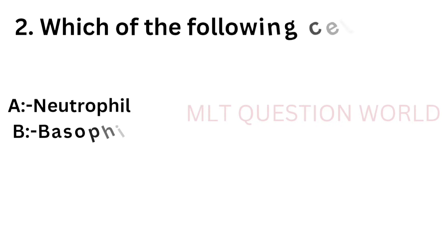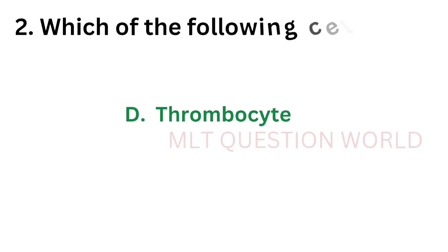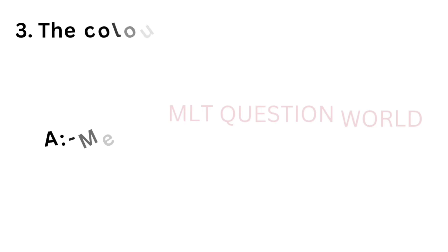Question number 2: Which of the following cells is not a WBC? Option A: Neutrophil, option B: Basophil, option C: Monocyte, option D: Thrombocyte. The correct answer is option D, Thrombocyte. Neutrophil, basophil, and monocytes are white blood cells, but thrombocyte is not. So the correct answer is option D, Thrombocyte.